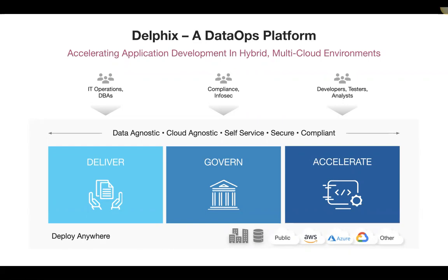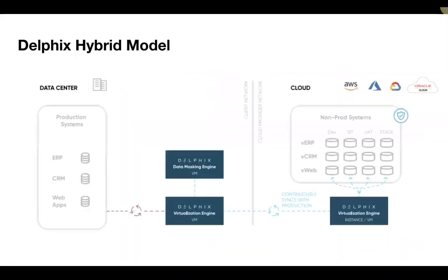Once we have data in that secured, lightweight delivered clone format, we can accelerate how that data is used — from an application development and testing perspective, integrating not just code change and test automation but also data into that automation delivery pipeline. At the end of the day, this addresses the real business value: maintaining a competitive edge, accessing or creating new customer experiences, and enabling the true business drivers that help your organization succeed. Let's take a look at how more specifically the Delphix platform enables that.